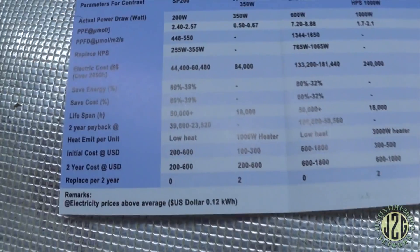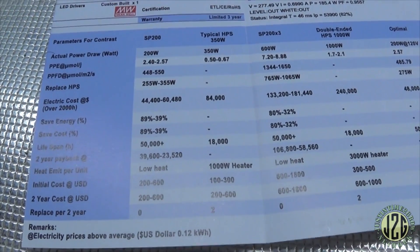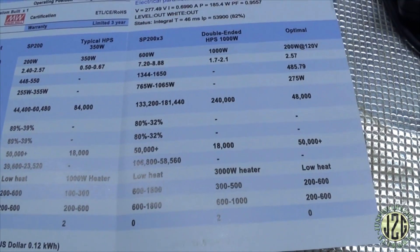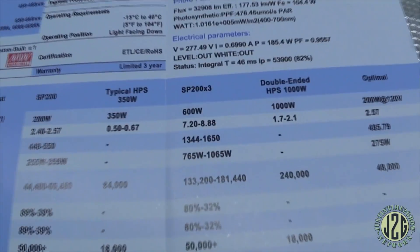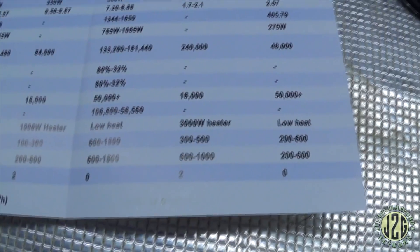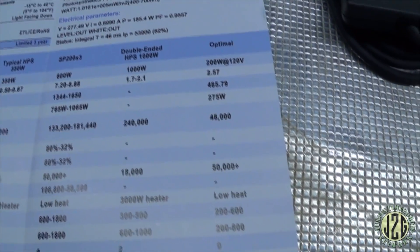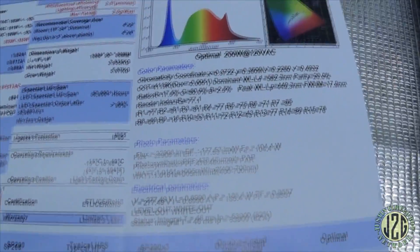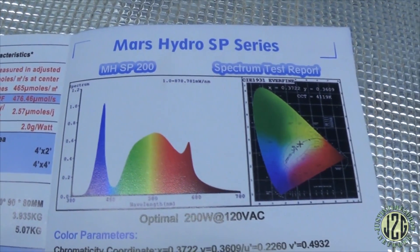And then it has some comparisons down here to SP200 vs 350 watt HPS, a couple of SP200s... or no, three SP200s it says there versus like say double ended HPS. So there's some comparison stuff they have. There's the spectrum anybody's interested.